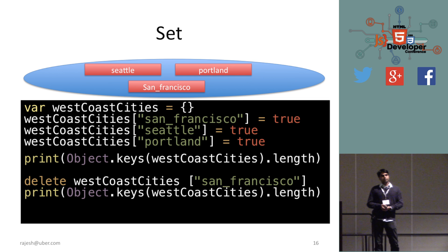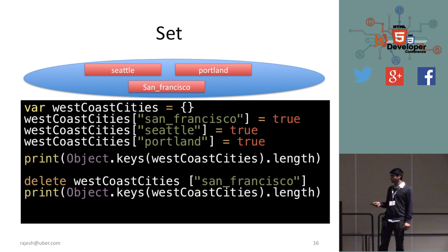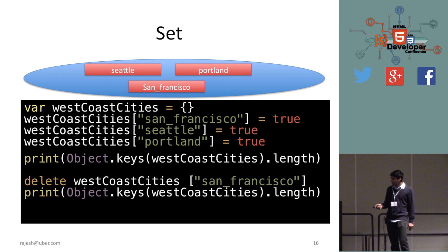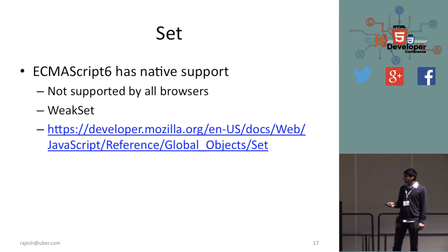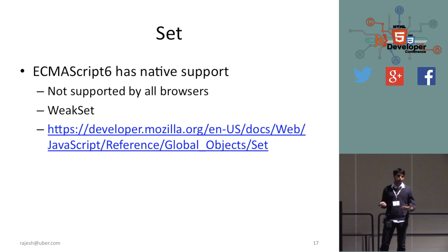A set is similar to a map, except it just says yes or no — does it have a value? Is it part of the set? You can imagine it as a bag containing cities like Seattle, Portland, San Francisco. In JavaScript, using a plain object you set values to true. ECMAScript 6 has native Set support with object keys, and there's also WeakSet similar to WeakMap.